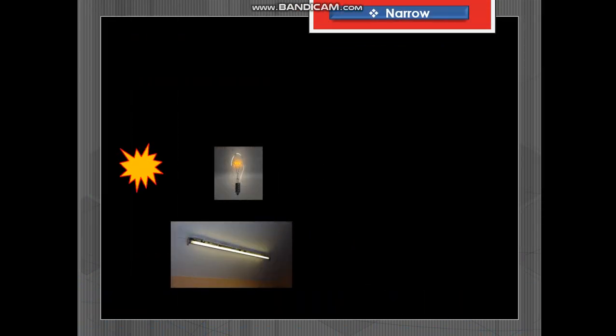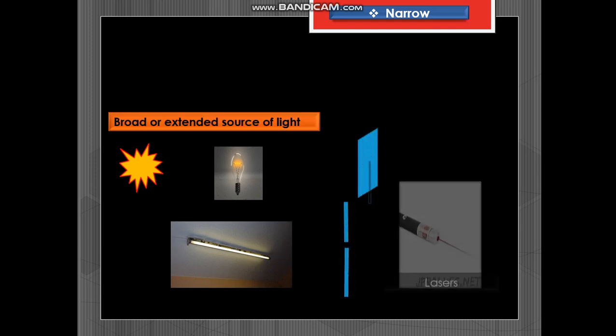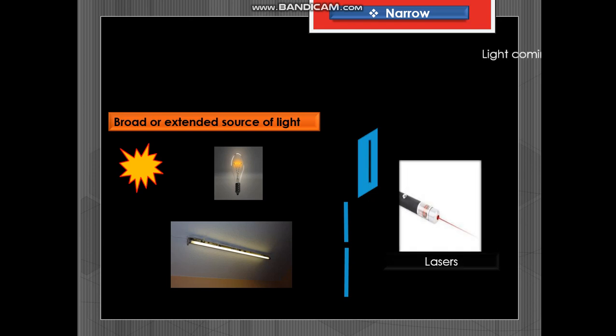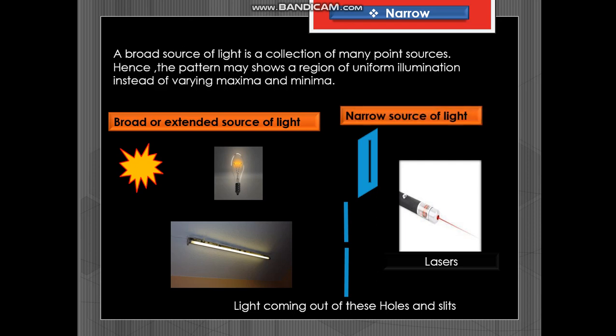They should be narrow. Now these are the extended sources of light which is also known as the broad source. These two are the light coming out from the holes and slits and the laser, they are narrow sources of light. A broad source of light is a collection of many point sources.